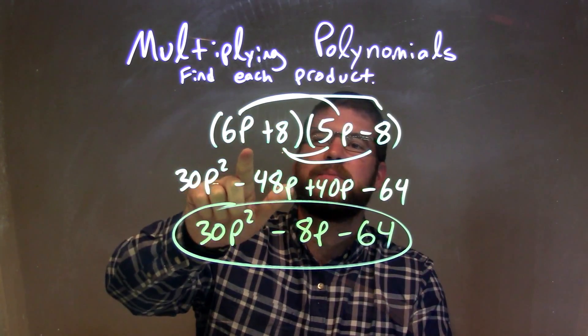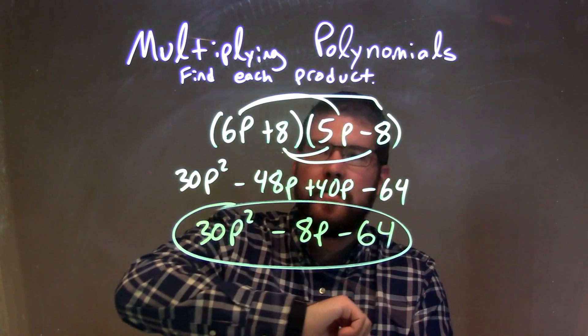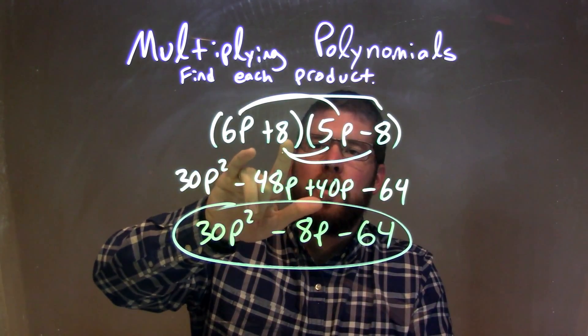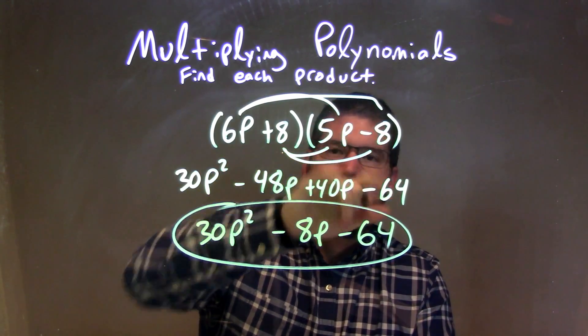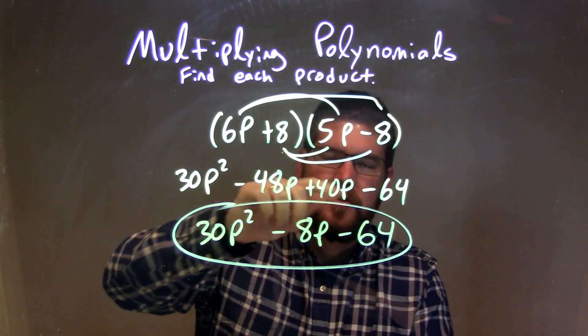Let's recap. We're given 6p plus 8 times 5p minus 8. We need to multiply all parts of my first parenthesis by all parts of my second parenthesis, so we draw our arcs to show that we've done it.